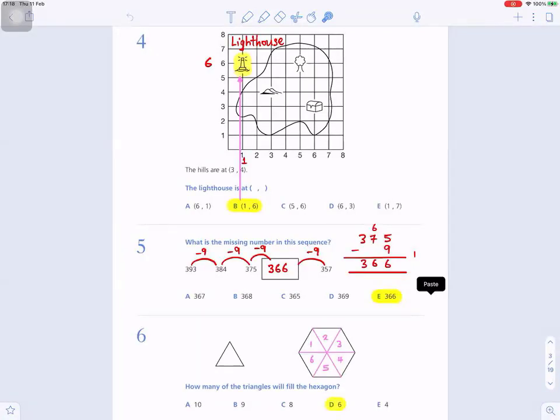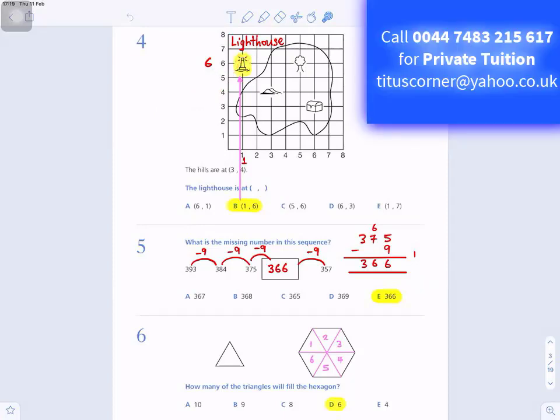Question number 4: The hills are at 3, 4. So the lighthouse is at... We have to know what the lighthouse symbol looks like first of all. So that's the symbol for the lighthouse. You can see those little stars there. It shows it's a lighthouse. So where is it at? You go horizontally first, before you go vertical. So it's along the stairs and up the corridor.